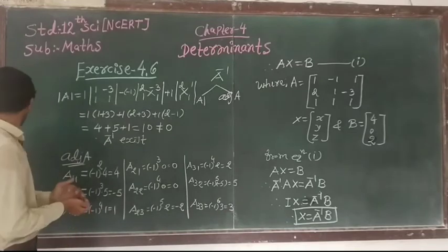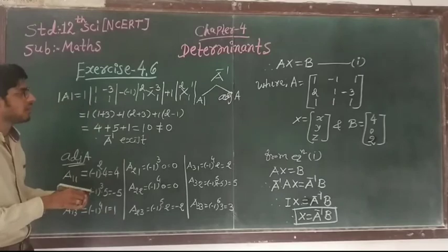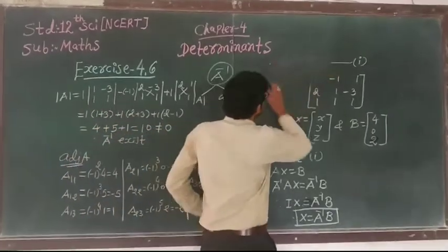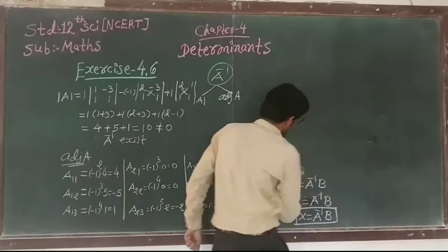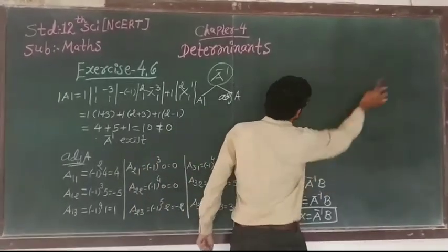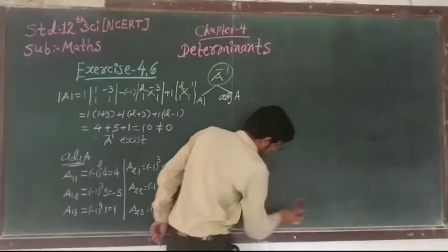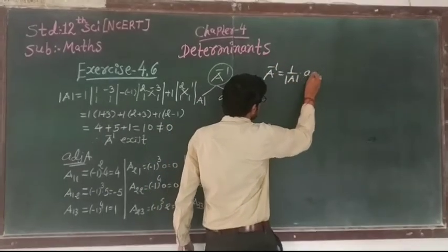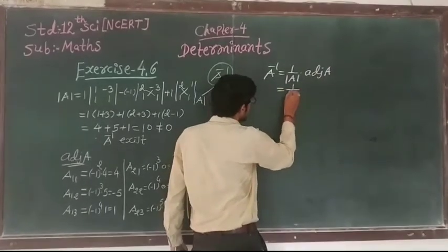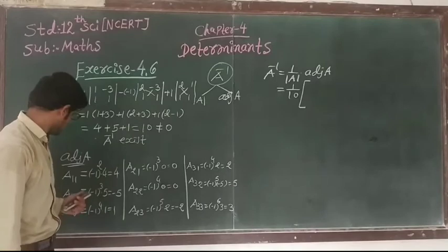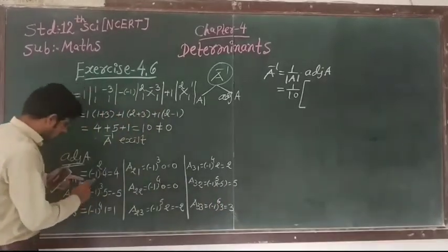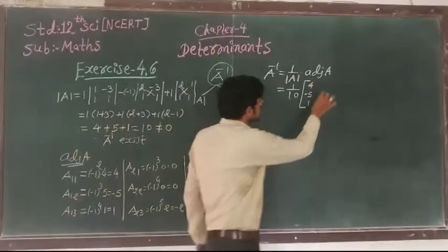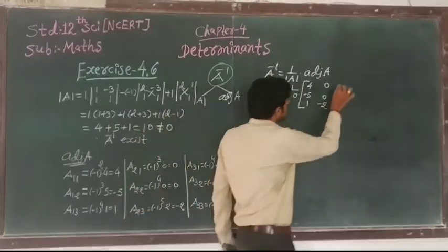Next we have to use the formula for A inverse and find A inverse. A inverse equals 1 over determinant of A times adjoint of A, equals 1 over 10. The adjoint of A is [4, 0, 2; -5, 0, 5; 1, -2, 3].